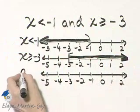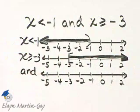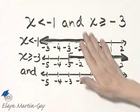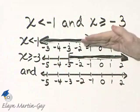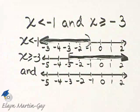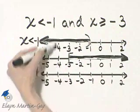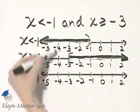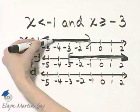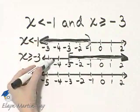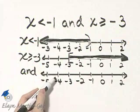Now the third number line is where we take the intersection. So we're interested in where both number lines have been shaded. I'm only interested in where both number lines have been shaded. Notice over here between negative 4 and negative 5, for example, only this number line has been shaded and not this one. So that's not a part of the intersection.